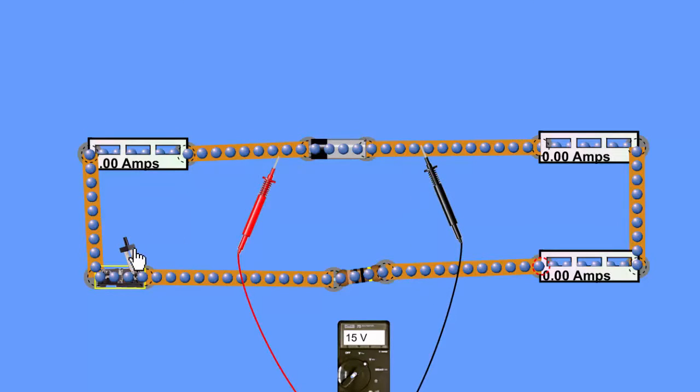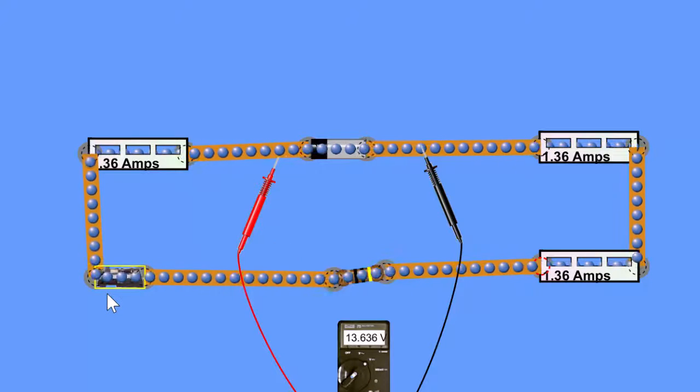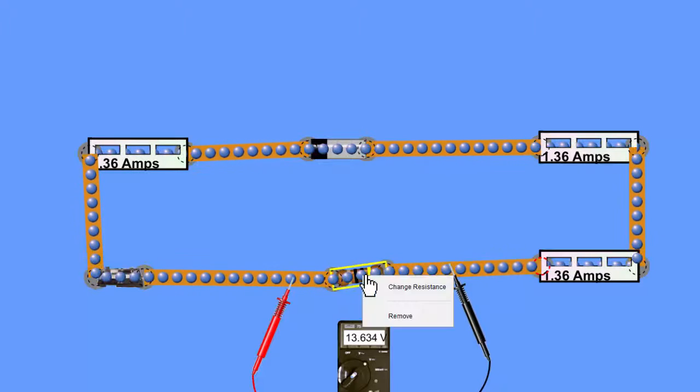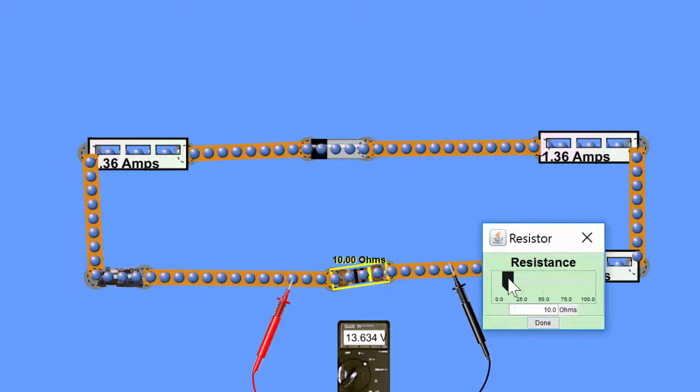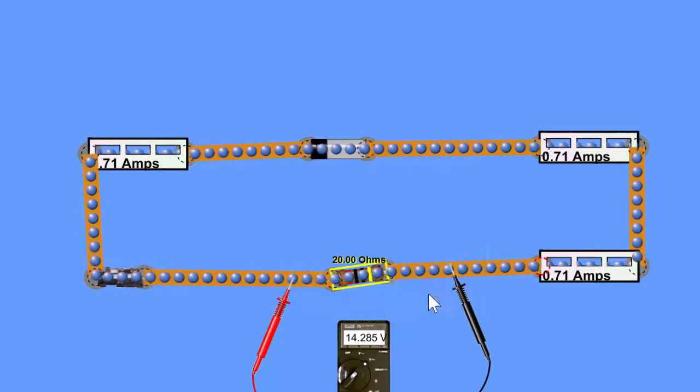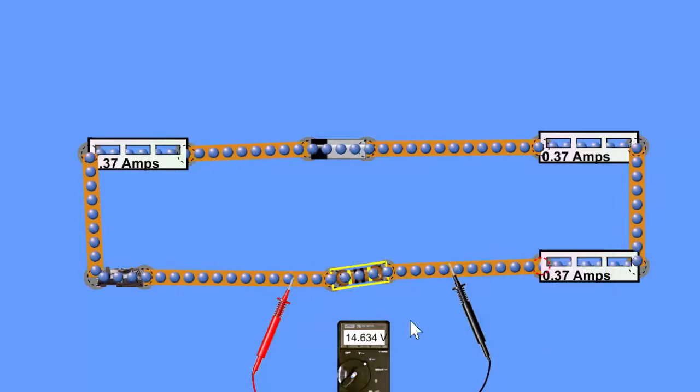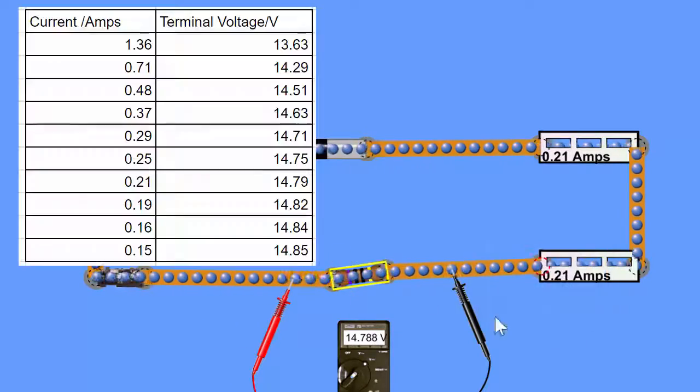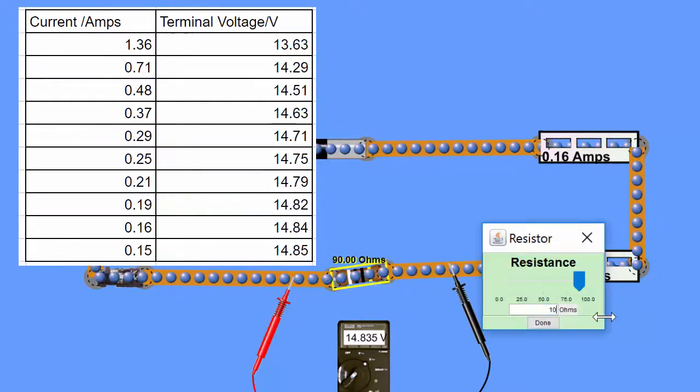Now we're seeing the terminal voltage when the switch is open is 15 volts, but when closed is 13.636. So now I'm able to go in and change the resistance of the external resistor whilst measuring the terminal voltage. And collect values for the terminal voltage and the current consecutively to get a data set which I'll be able to plot on a graph.